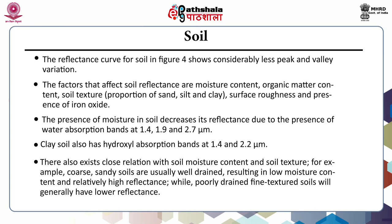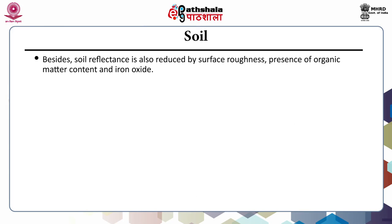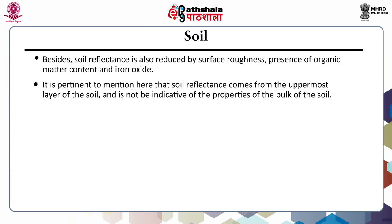There also exists a close relation between soil moisture content and soil texture. For example, coarse sandy soils are usually well drained, resulting in low moisture content and relatively high reflectance, while poorly drained fine-textured soils will generally have lower reflectance. Besides, soil reflectance is also reduced by surface roughness, presence of organic matter and iron oxide. It is pertinent to mention that soil reflectance comes from the uppermost layer of the soil and is not indicative of the properties of the bulk of the soil.